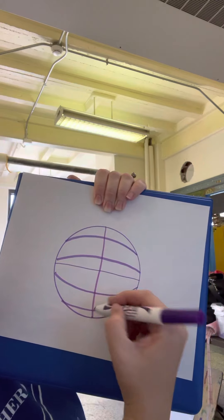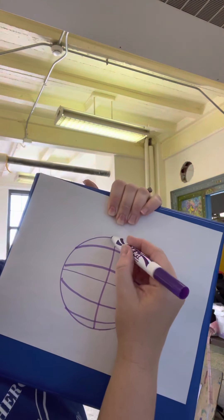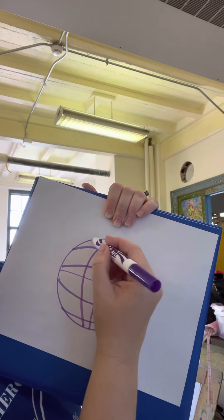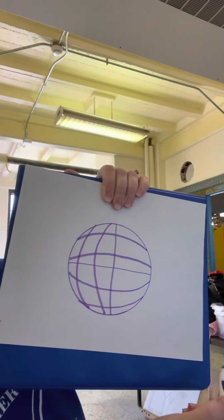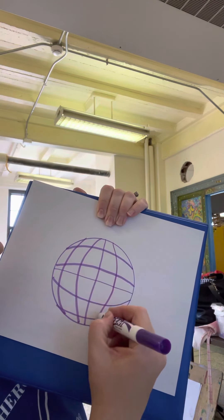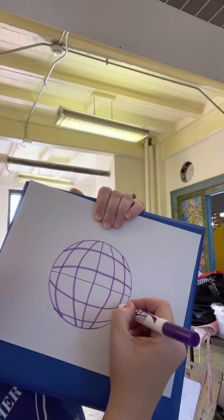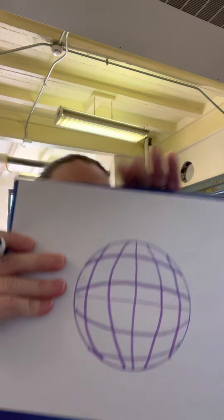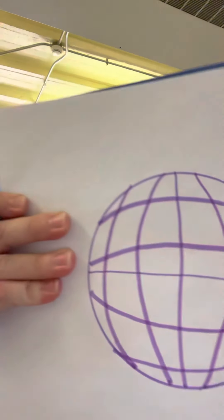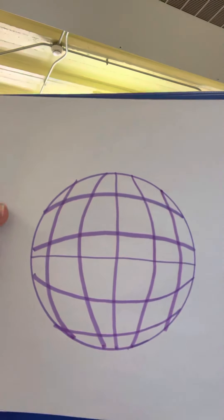You're gonna go straight down the middle, then you're gonna curve on the left side, curve on the left side, and then on the right side, curve on the right side, curve on the right side, and then you have your gridded sphere.